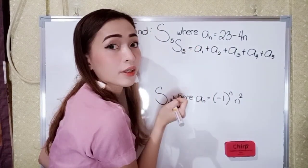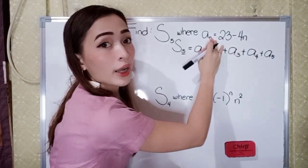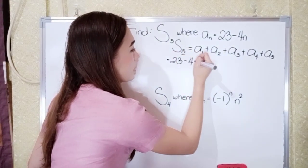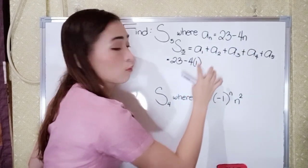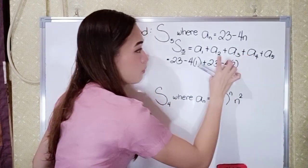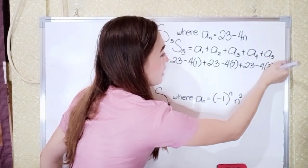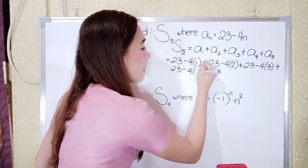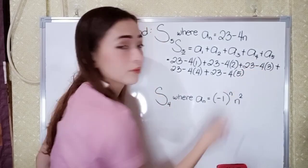Because we have 5 here. Next is just to substitute the values 1, 2, 3, 4, 5 to our N. So this will become 23 minus 4 times 1, plus 23 minus 4 times 2, plus 23 minus 4 times 3, plus 23 minus 4 times 4, plus 23 minus 4 times 5.